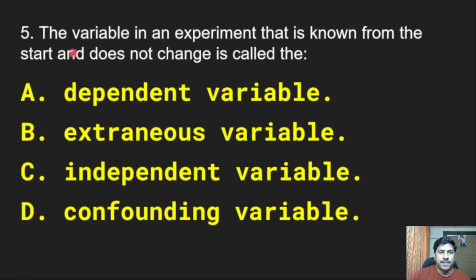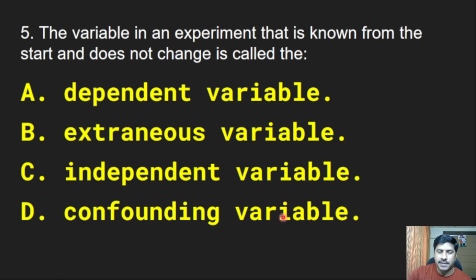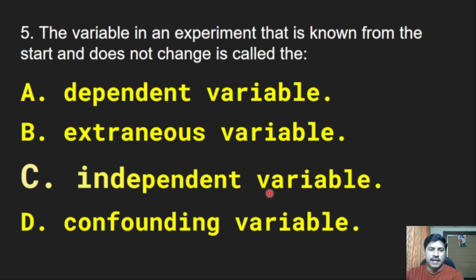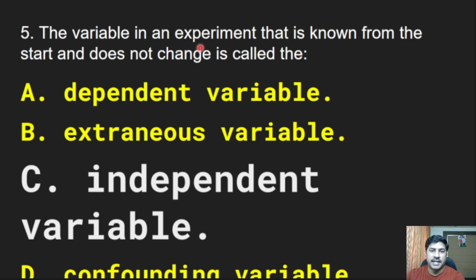Next question: The variable in an experiment that is known from the start and does not change is called — dependent variable, extraneous variable, independent variable, or confounding variable? Correct answer is option C, independent variable. The independent variable does not change during the course of results, while the dependent variable changes during the results.